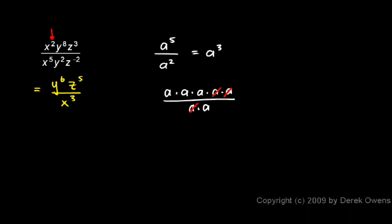Now the x's: I have x squared divided by x to the fifth, so I have two minus five, and that gives me negative three. So I have x to the negative three. What you need to realize is that that is the same as one over x to the positive three. Having a negative exponent is the same as having that same exponent as positive in the denominator. So when I do two minus five and get x to the negative three, that's the same as having x to the positive three down in the denominator. That's how I got the final answer: y to the sixth times z to the fifth over x to the third.